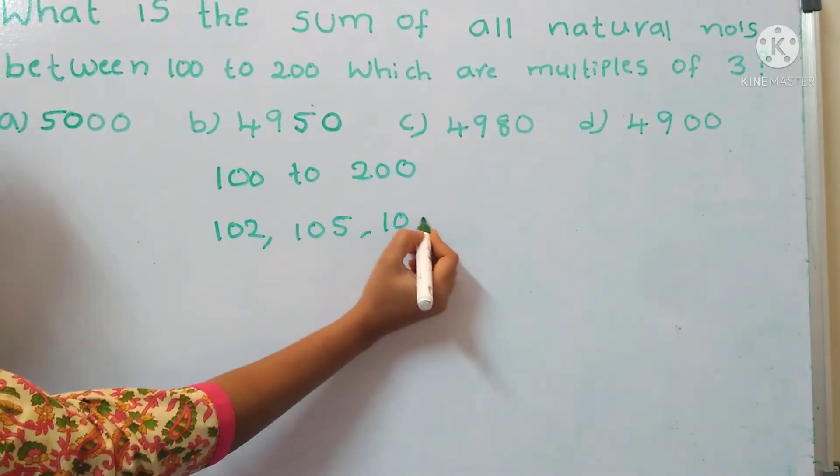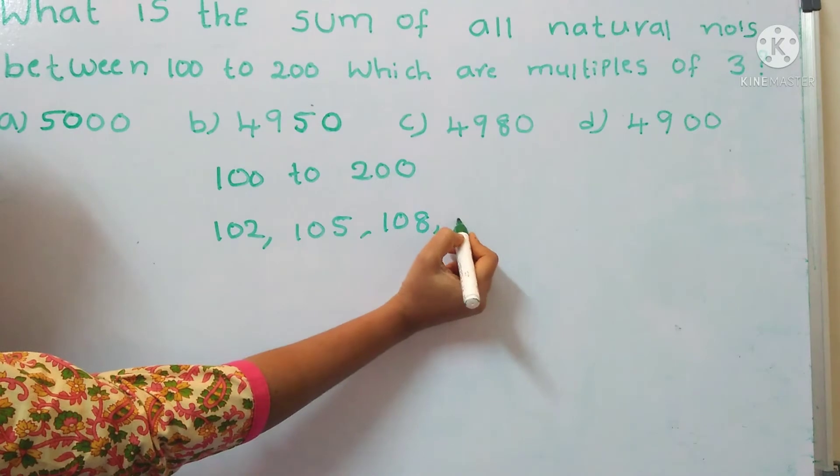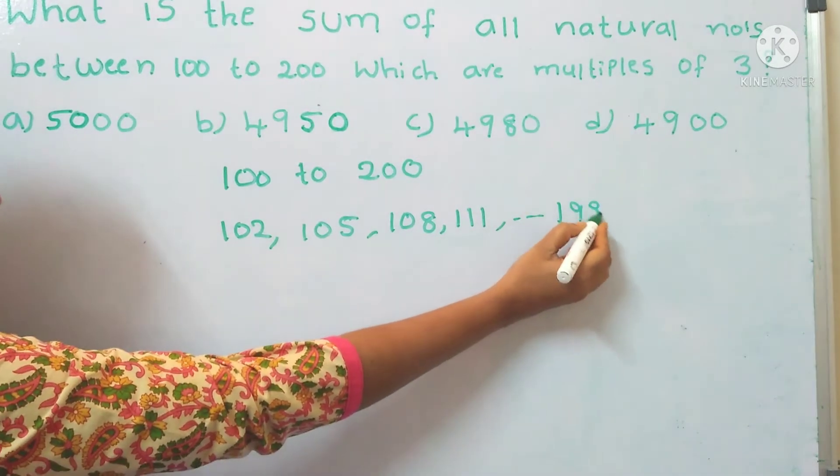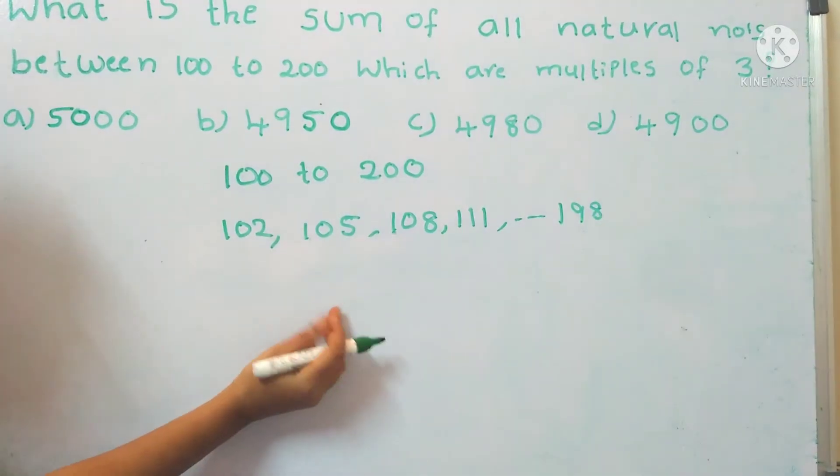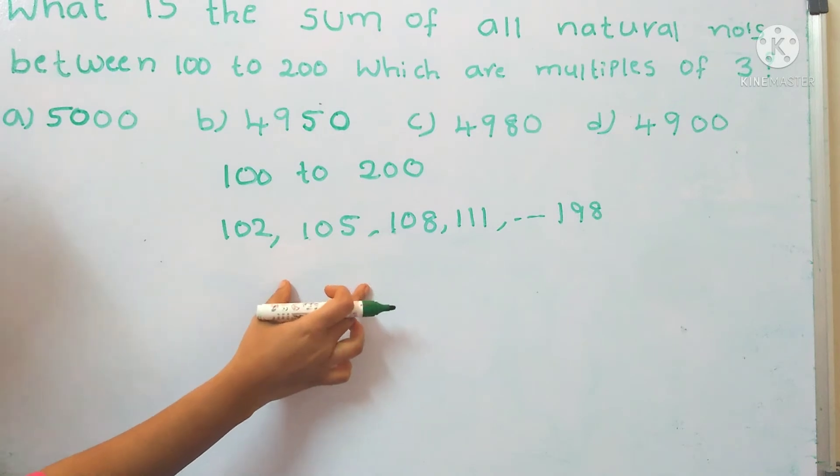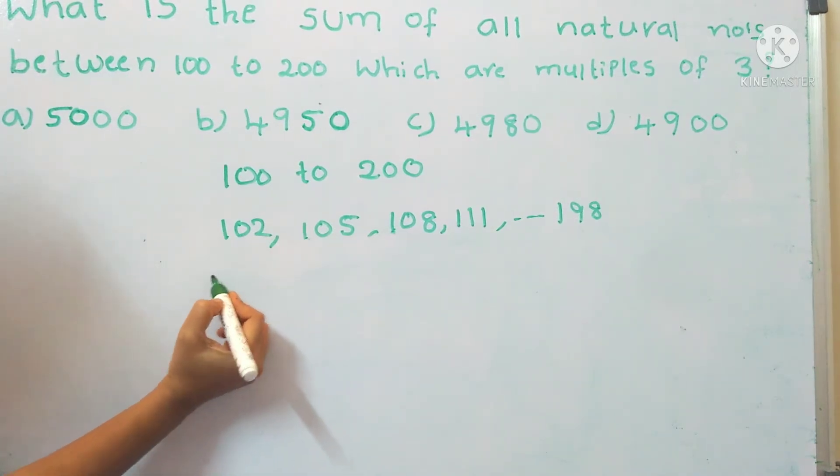108, 111, and till 198. These numbers are multiples of 3 between 100 to 200.